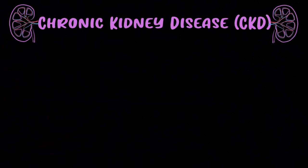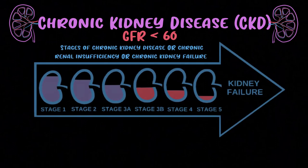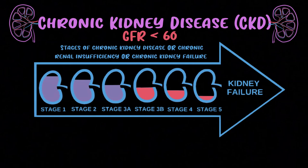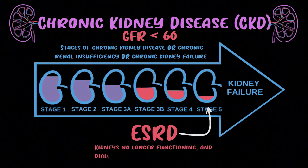Chronic kidney disease doesn't tell you what the underlying problem is — just that the kidney isn't functioning well. CKD is defined as an eGFR less than 60. Terms like chronic renal insufficiency and chronic renal failure all mean the same thing: the kidney isn't functioning great. End-stage renal disease (ESRD) is the final stage of CKD, when kidneys function so poorly they're basically not sustainable for life — requiring dialysis or a kidney transplant.